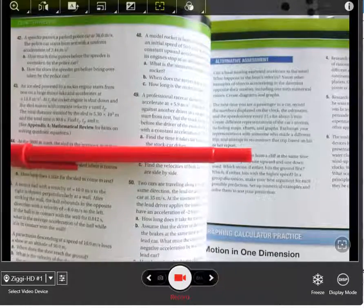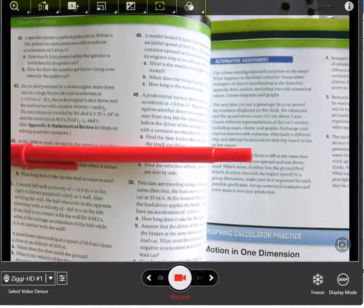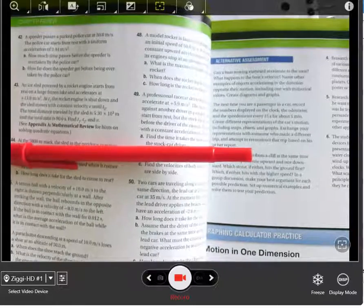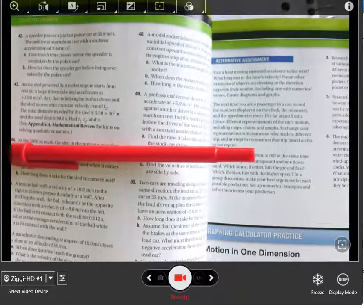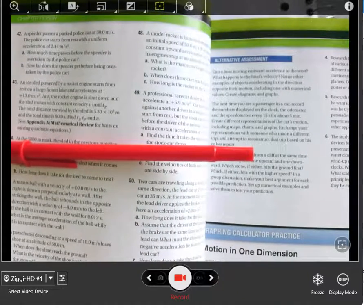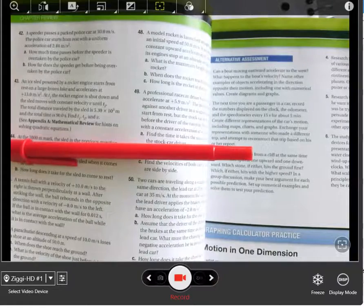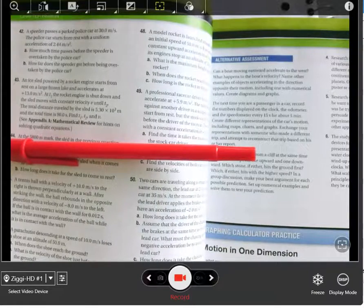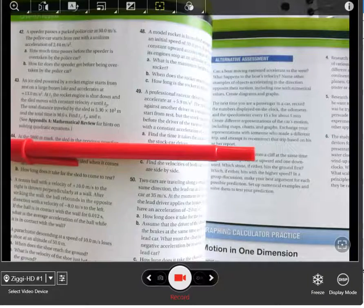Number 43, a standard rocket problem. An ice sled powered by a rocket engine starts from rest and accelerates until the engine is shut down. Being on a frictionless icy surface, this sled then continues moving at a constant speed. We've got three variables to solve for, and that means we're going to need at least three equations.